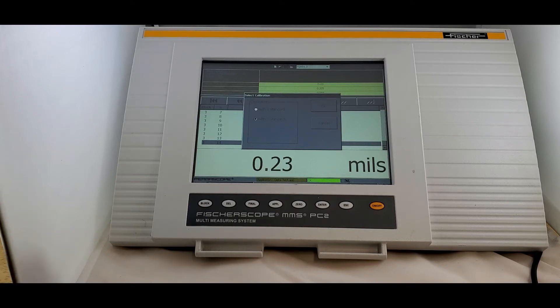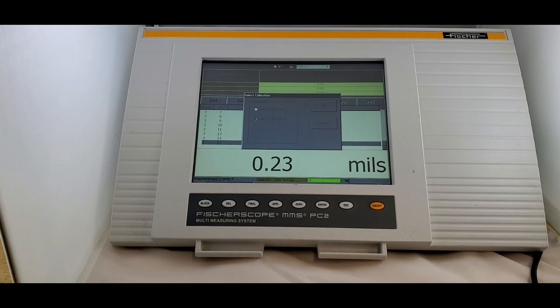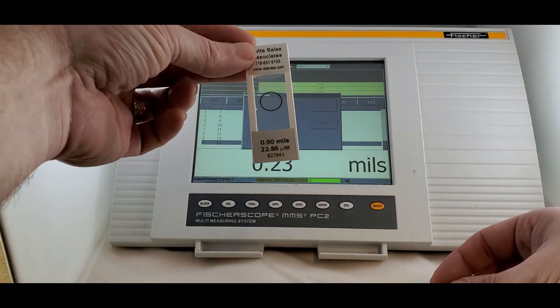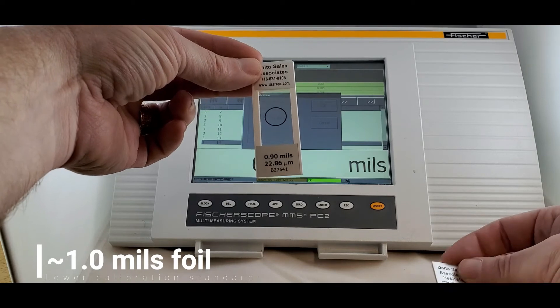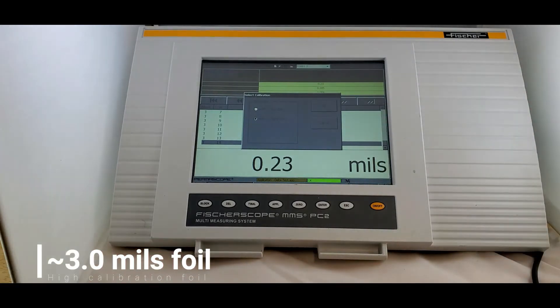You want to have two standards that are outside of your desired coating specifications. So for our purposes today, we're going to say that our coating specs should be somewhere between 1.5 and 2.5 mils. I'm going to work in mils just because that's how this unit's already set up. So what I've got for calibration is I have a 0.9 or essentially 1 mil foil, and then I have a 3 mil foil. That's just outside of the range that we're looking to do.